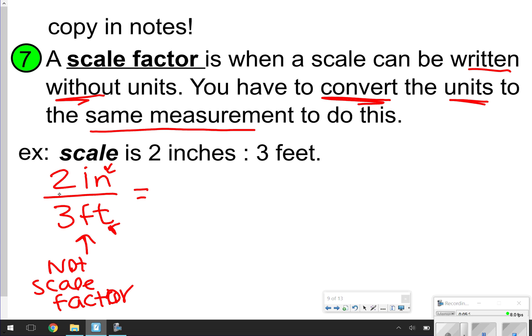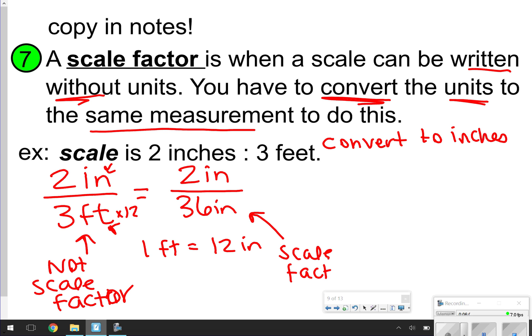They need to be written without units, and to do that, you have to convert the units to the same measurement. It would be a lot easier if I could just convert everything to inches. So I'm going to convert to inches. 2 inches is already in inches, so I can just rewrite 2 inches. 3 feet is not. Remember, 1 foot equals 12 inches. So if I have 3 feet, 3 feet times 12 is 36 inches. Here, it is scale factor, because it's written in the same units. The only thing now I just have to do is simplify. So 2 over 36 simplifies down to 1/18.